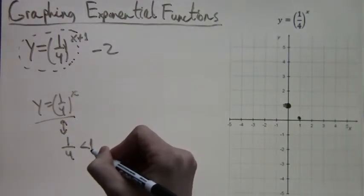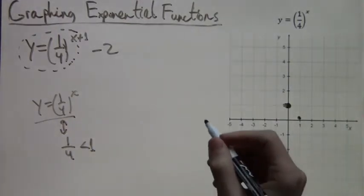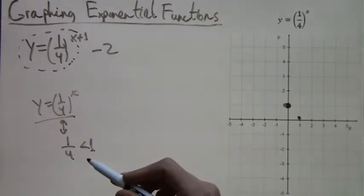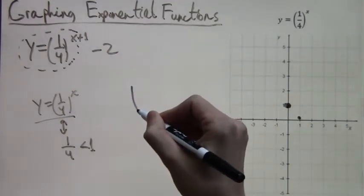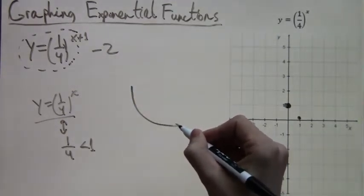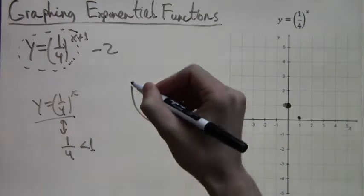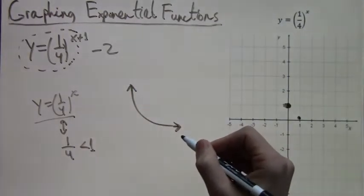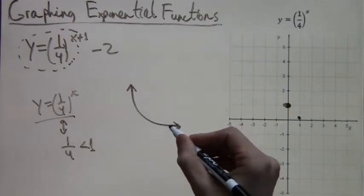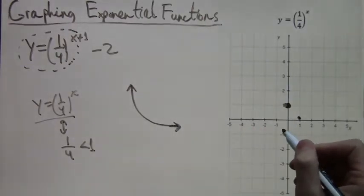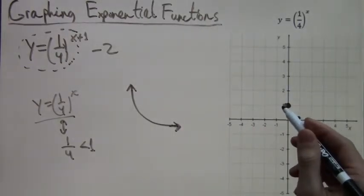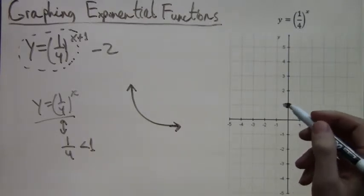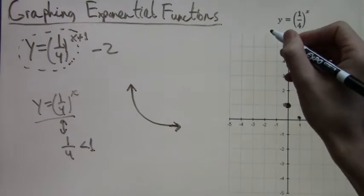Alright, now the important part. One fourth is less than one. This means that our graph will be curving downwards and getting very close to zero. Rather than starting close to zero, it ends close to zero. That is the general shape of our graph. Now we just have to draw it on our coordinate plane. So here it goes.